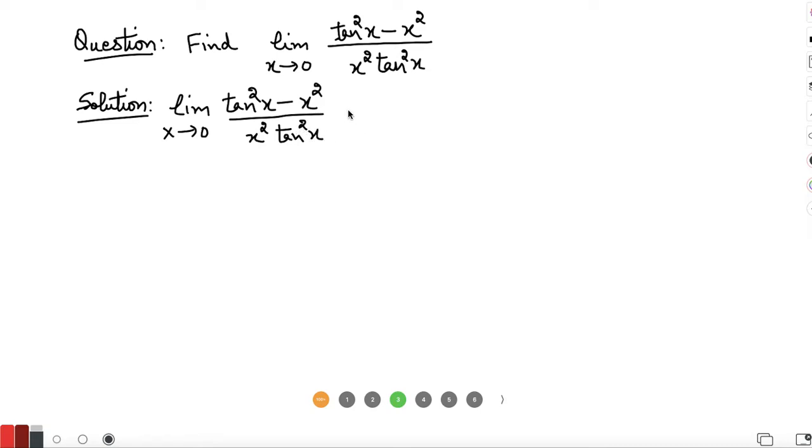First, before using L'Hôpital's rule, we will use the properties of limit. In this case, the numerator is like a squared minus b squared, so we can rewrite it as (a minus b) times (a plus b). So tangent x minus x times tangent x plus x.